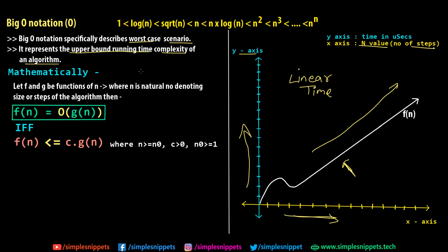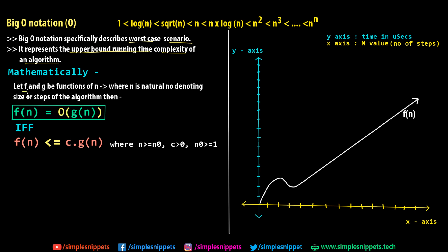When doing algorithm analysis we want mathematical representations, which is where functions and notations come in. For big O notation, we are representing the upper bound or the upper time limit — the worst case. It's basically saying your algorithm will take at maximum y minutes for x number of inputs and will not go above this limit. Mathematically, we let f and g be functions of n, where n is a natural number denoting the size or steps of the algorithm.